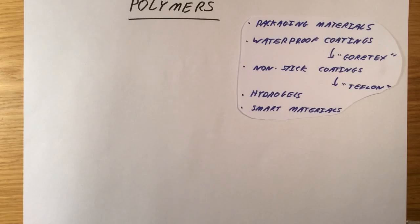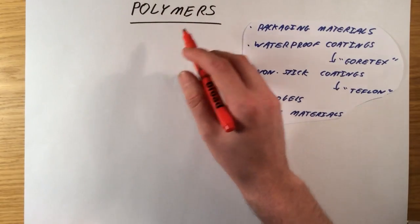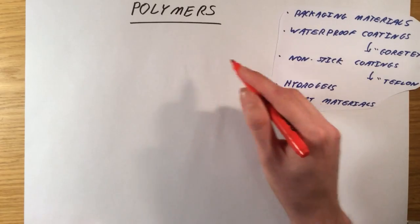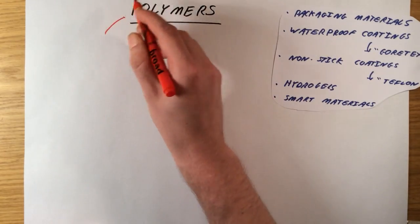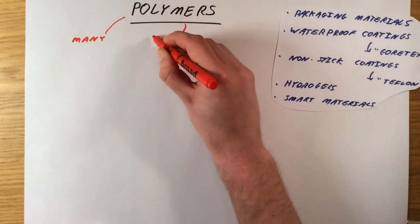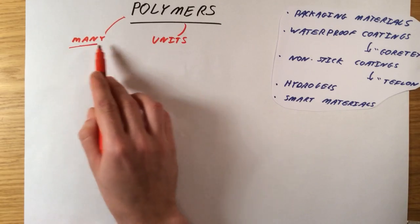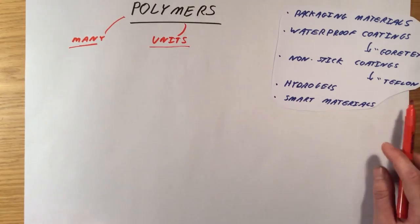The only thing that these all have in common is that they are formed from long chain molecules. This part poly here means many, mers means units. So polymers have lots of different individual units which are joined together.